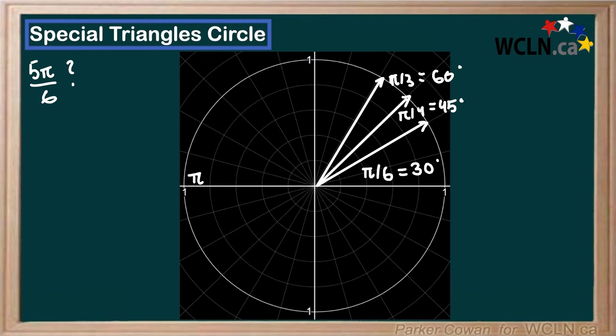So we have 1, 2, this would be our third at pi over 2. Then we have our fourth. Okay? So sometimes it's also easier to just think of this as 3 pi over 6. And then we have 4 pi over 6. And then we have 5 pi over 6.